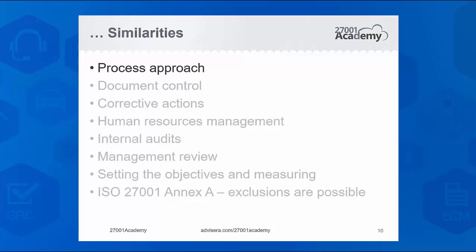The second similarity is document control. Both standards require you to define exactly who can approve new documents, who needs to review them, where they are published, how they are distributed, how they are withdrawn — the requirements in both standards are the same. This means that when you write a procedure for document control, you can use one and the same procedure for both standards. You do not need two separate document control procedures — one for 27001 and another for 9001. It doesn't make sense. Same thing for corrective actions — you can use one document for both, because the requirements are exactly the same.